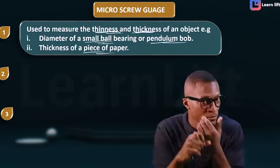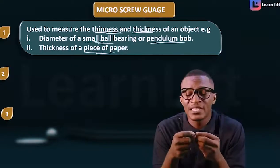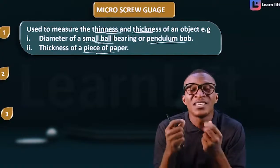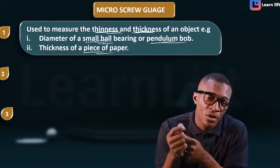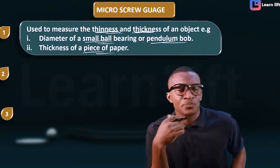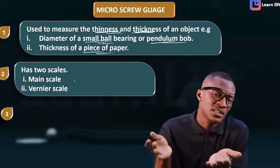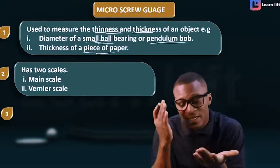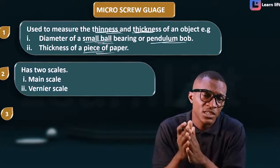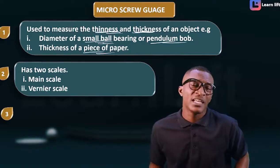Number one: it is used to measure the thickness of an object — examples include a small bearing ball, a pendulum ball, and a piece of paper. If you want to check the thickness of a piece of paper or a small ball, you use the micrometer screw gauge. Number two: it has two scales — the main scale and the screw scale, also called the vernier scale.